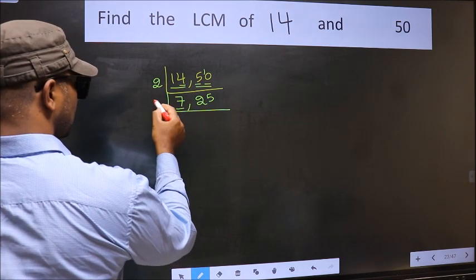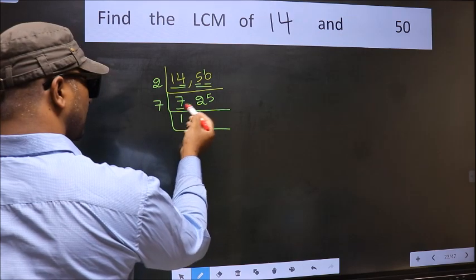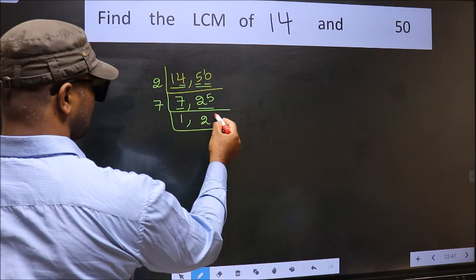Now, here we have 7. 7 is a prime number, so 7 times 1 is 7. The other number 25, not divisible by 7, so you write it down as it is.